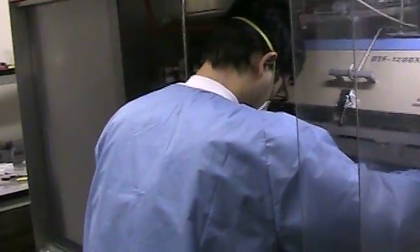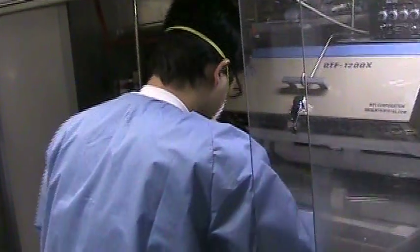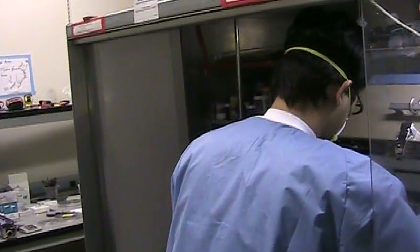The first step is to grow silicon germanium nanowires on the printing roller. Graduate student Toshitake Takahashi places the roller, which is simply a glass test tube, inside a chemical vapor deposition chamber. The roller has been coated with gold nanoparticles to seed the growth of the nanowires.